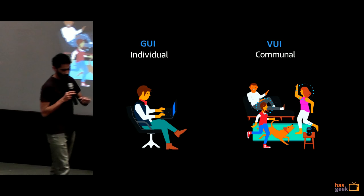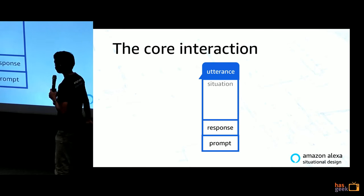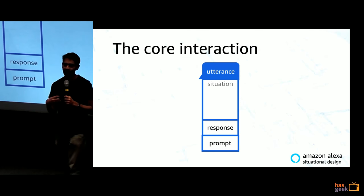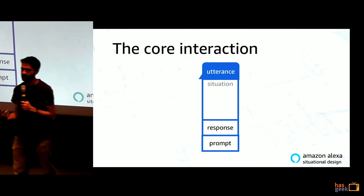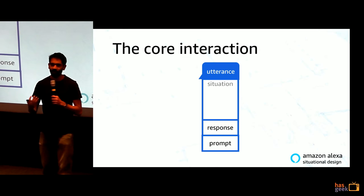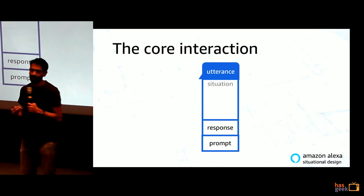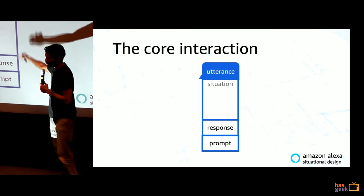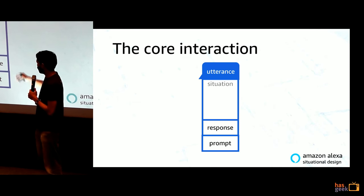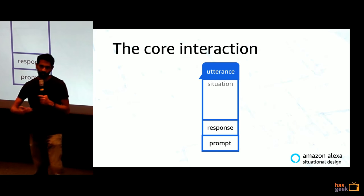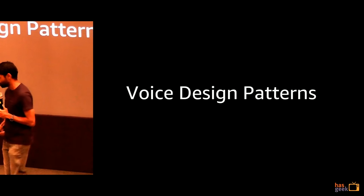Keeping those differences in mind, we've come up with four voice design patterns you need to think about when building for voice. Before that, here's the core interaction of any voice user interface: first the user says something — that's called an utterance. If I say 'Alexa, what's the weather?' — 'what's the weather' is the utterance. All voice interactions are very situation-specific, and the response you hear from Alexa is based on that situation. Sometimes there's a prompt from Alexa as well if the user hasn't said something.